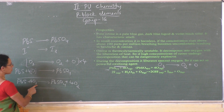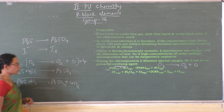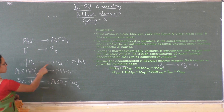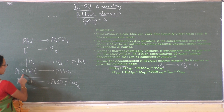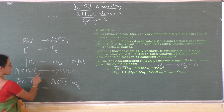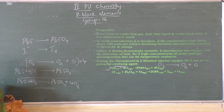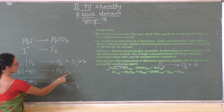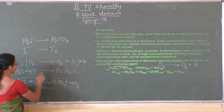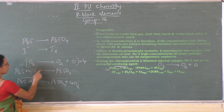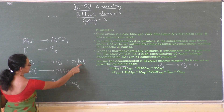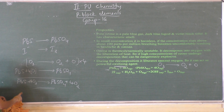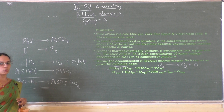On decomposition ozone releases nascent oxygen along with O2, and lead sulfide is oxidized by nascent oxygen to PbSO4. To get 4 nascent oxygen you have to multiply the equation by 4, and writing the net equation we get PbS + 4O3 → PbSO4 + 4O2.